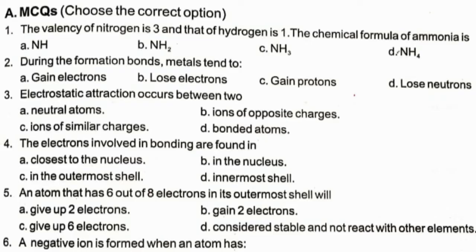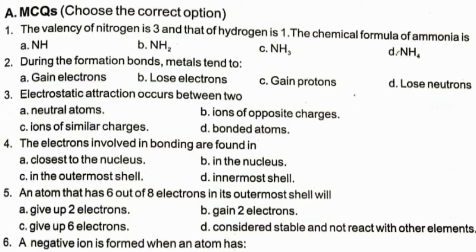Unit 6 Chemical Bonds. The valency of nitrogen is 3 and that of hydrogen is 1. The chemical formula of ammonia is option C. During bond formation, a metal tends to lose electrons.